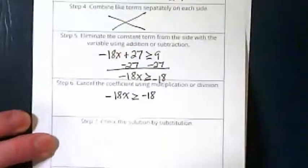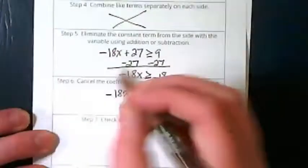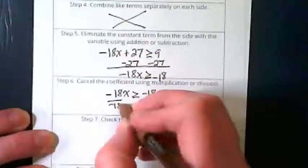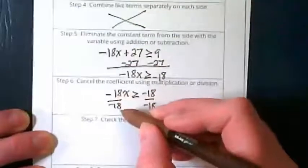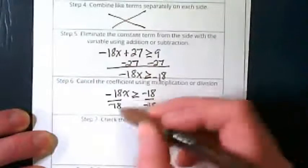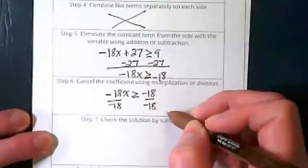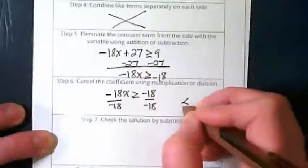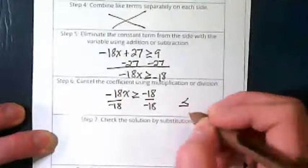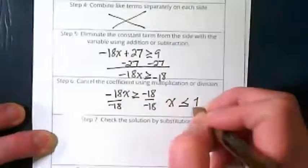My next step is to try to get a positive invisible 1. How do I do that? Divide by negative 18. Negative 18 over negative 18 gives me positive 1 on both sides, but I'm dividing by a negative, so what do I have to do? I have to flip the inequality sign, so it went from greater than or equal to to less than or equal to, on the left side is an x, and on the right side is a 1.